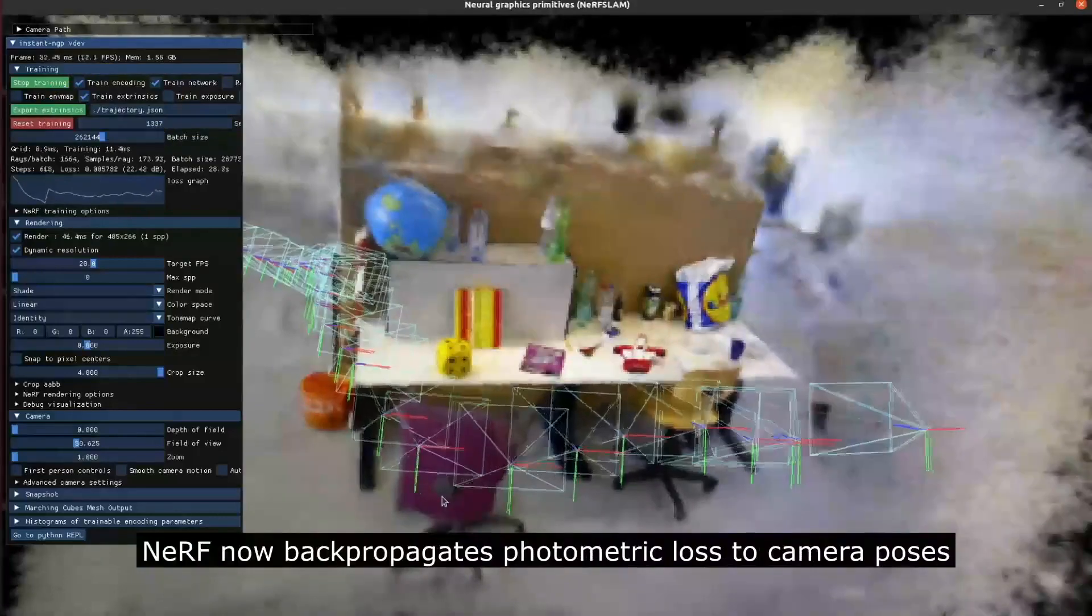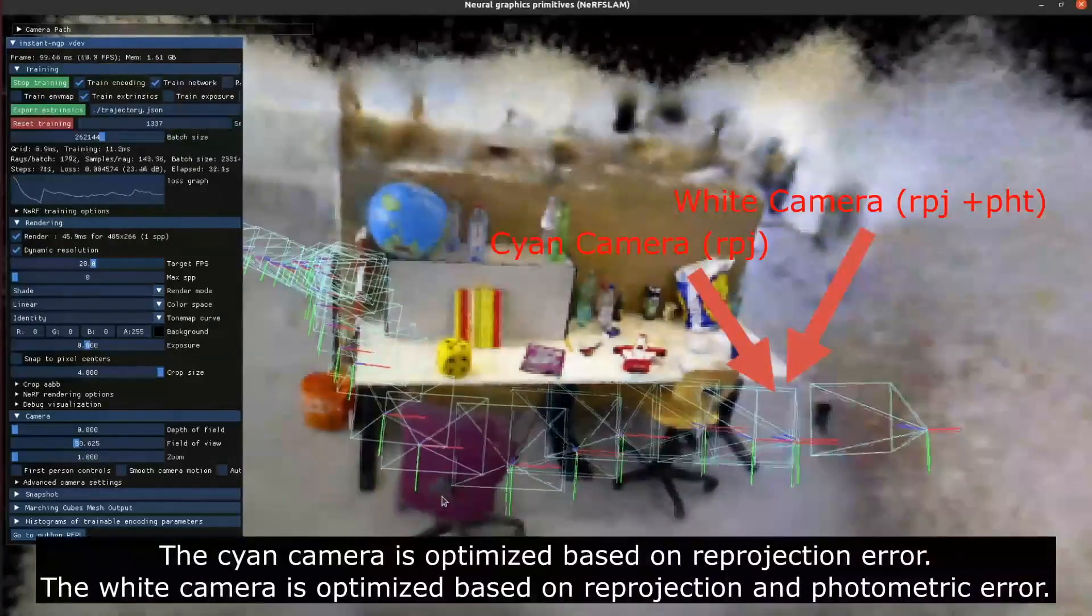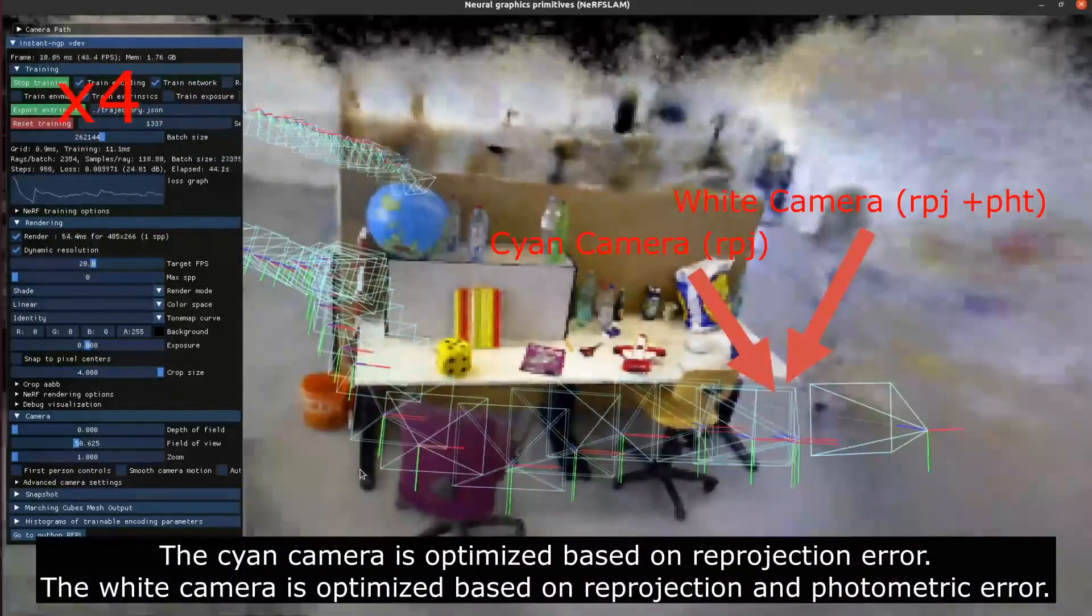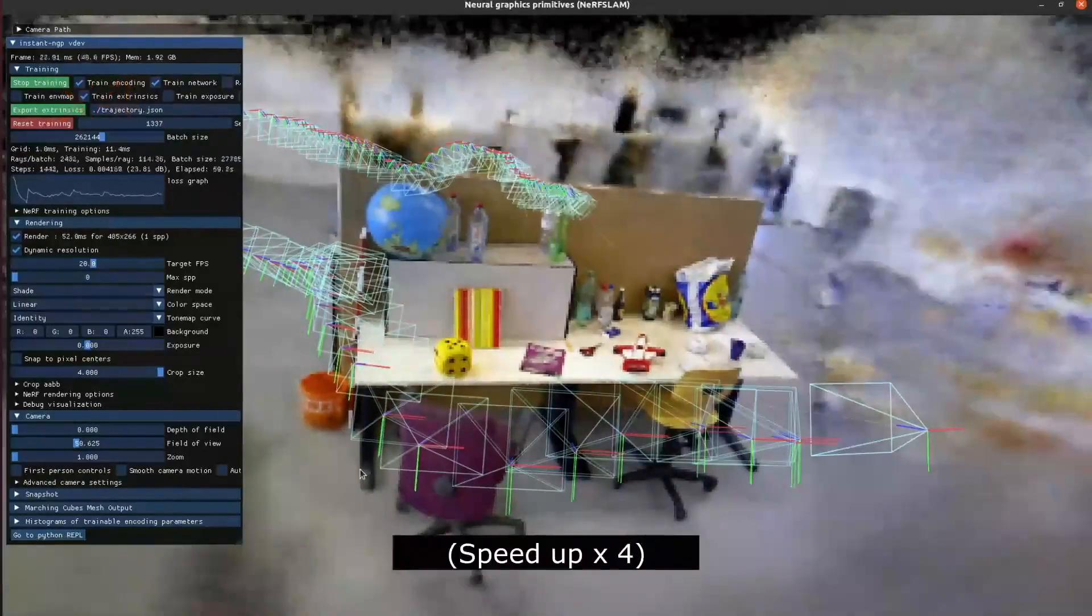NeRF now backprops photometric loss to camera poses. The cyan camera is optimized based on reprojection error, while the white one is optimized based on both reprojection and photometric error.